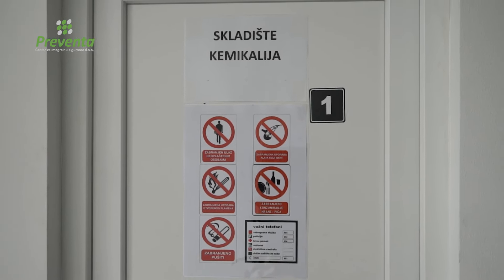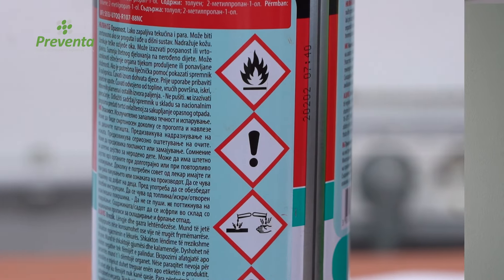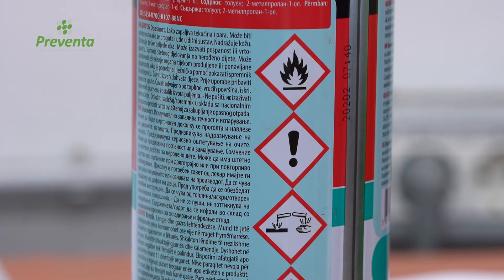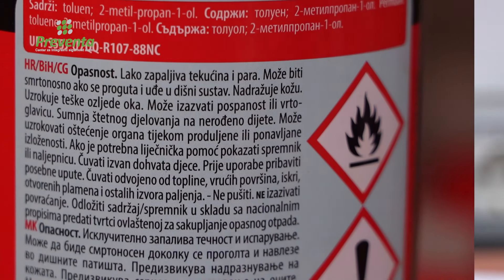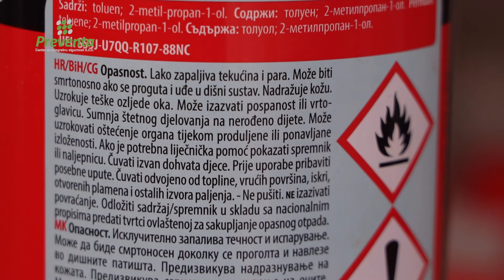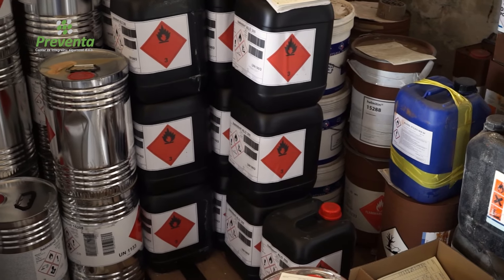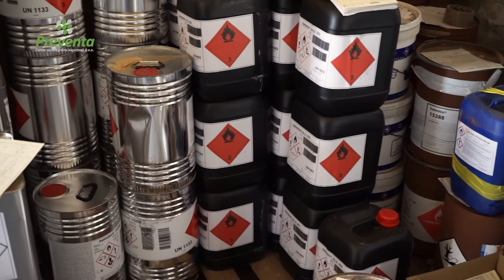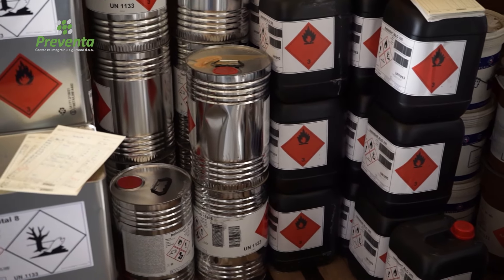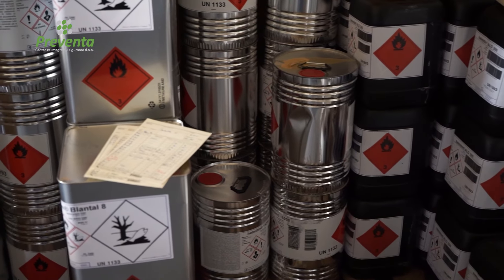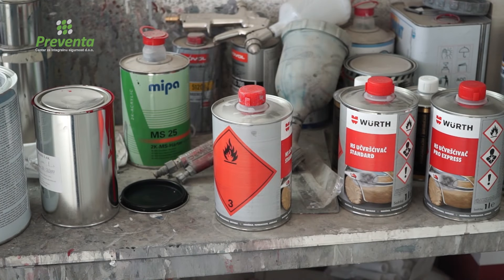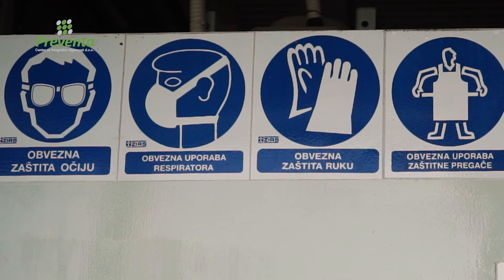The following instructions should be followed when handling hazardous chemicals. Read the manufacturer's instructions for the safe use and storage of chemicals before use. Hazardous chemicals should always be packaged and labeled in such a way that their use does not endanger the safety and health of workers. Containers in which chemicals are stored must always be tightly closed.